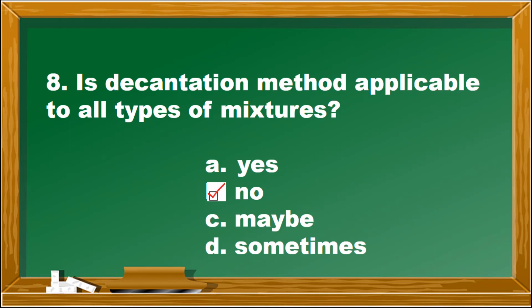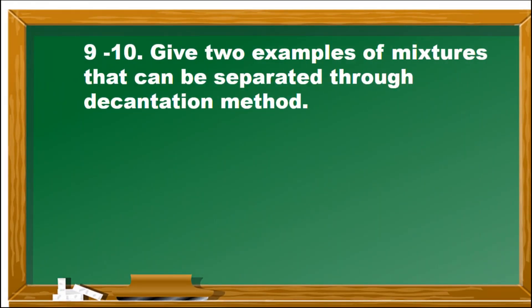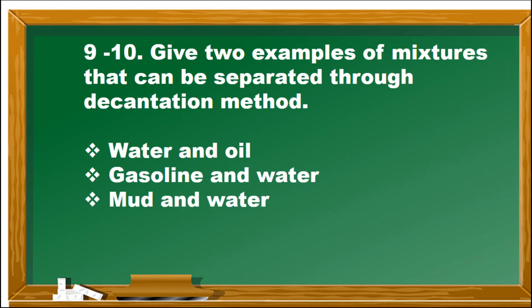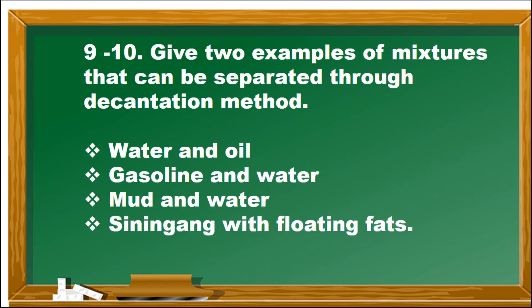Number eight: Is the decantation method applicable to all types of mixture? A. Yes, B. No, C. Maybe, D. Sometimes. The answer is B — no, not all mixtures can use decantation. Number nine and ten: Give two examples of mixtures that can be separated through decantation. The answer — choose any two from: water and oil, gasoline and water, mud and water, sinigang with floating fats.